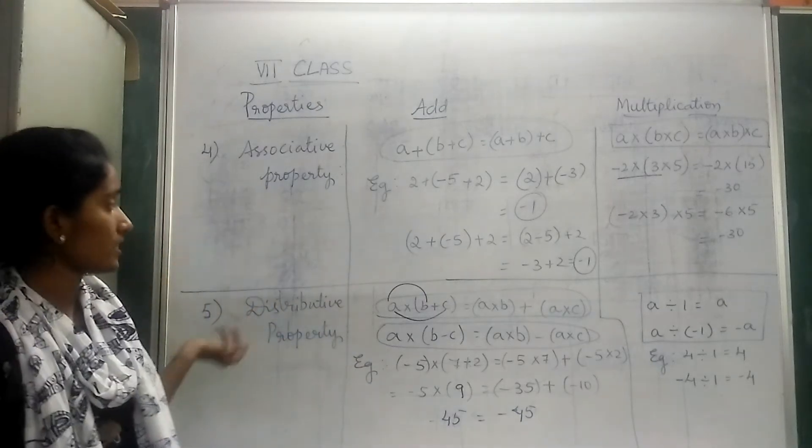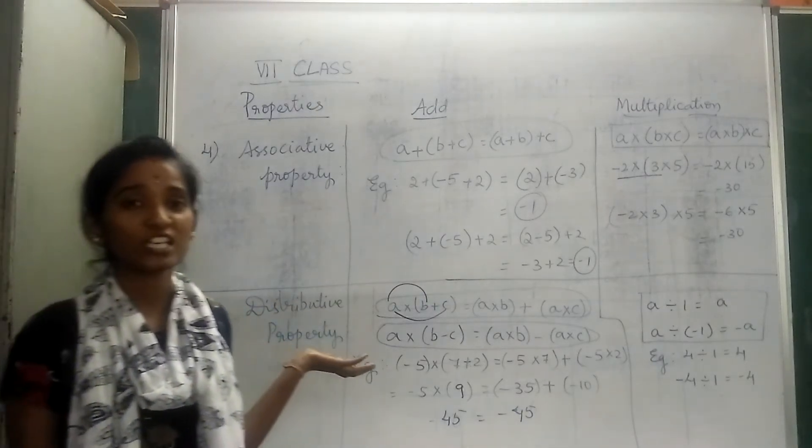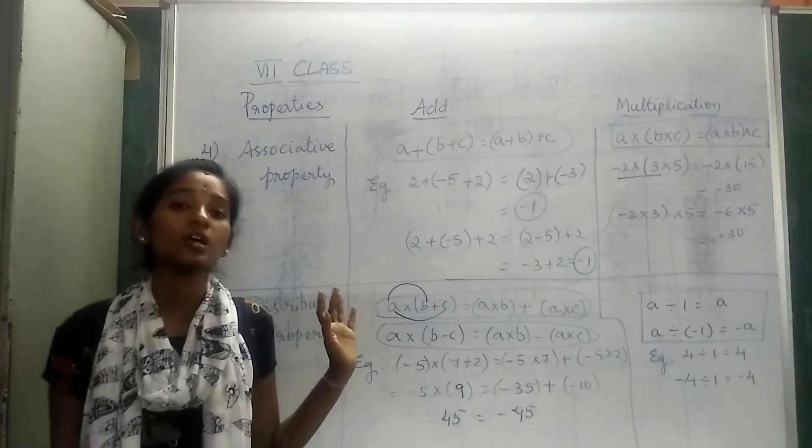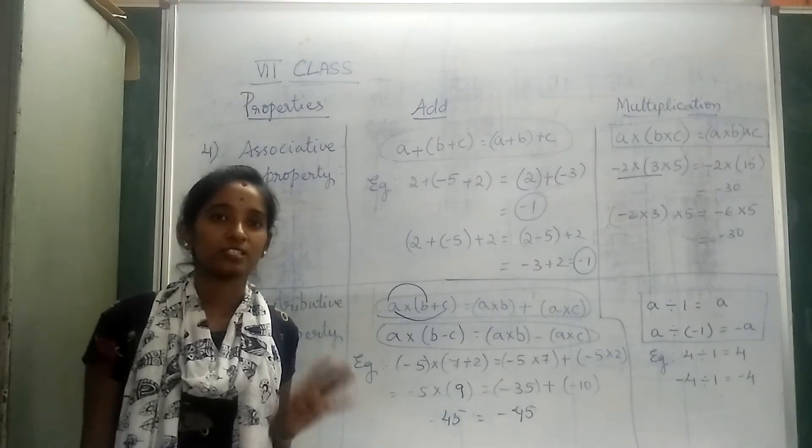Good morning children. Yesterday we learned that in the previous class we already covered three types of properties: the closure property, commutative property, and the identity property.